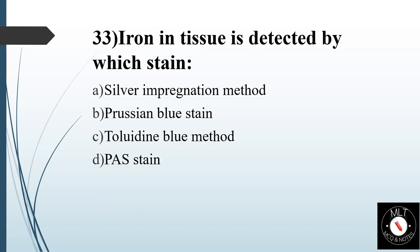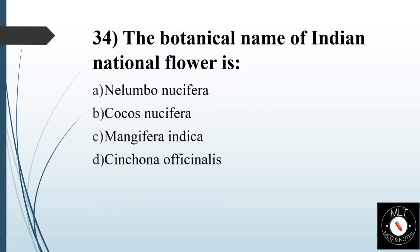Question 33. Iron in tissue is detected by which stain? Option A: Silver impregnation method. Option B: Prussian blue stain. Option C: Toluidine blue method. Option D: PAS stain. Answer is Option B: Prussian blue stain.